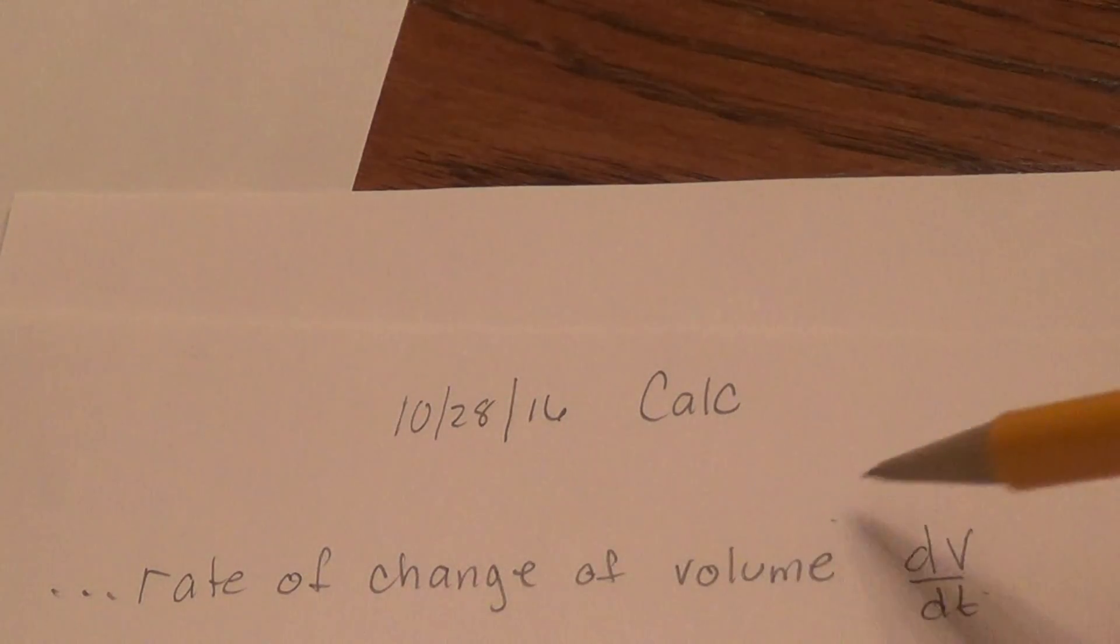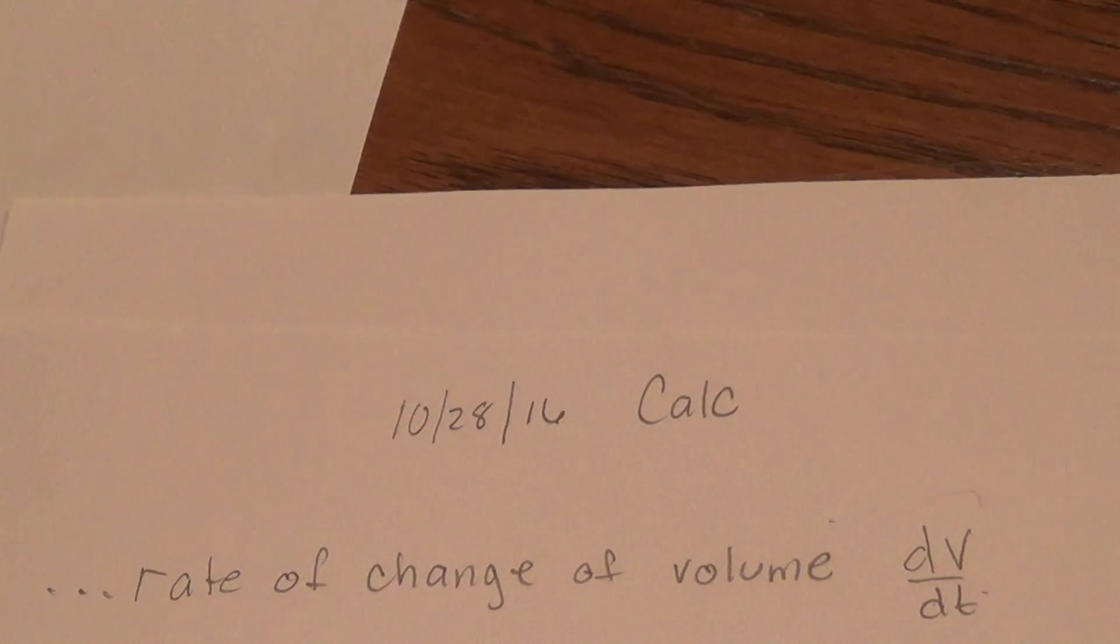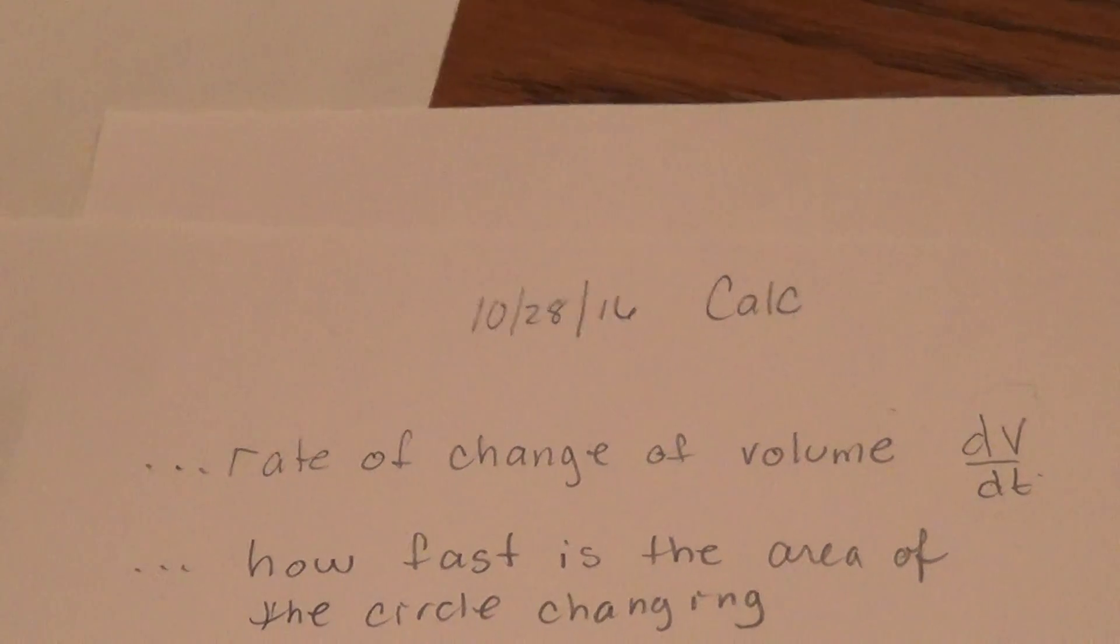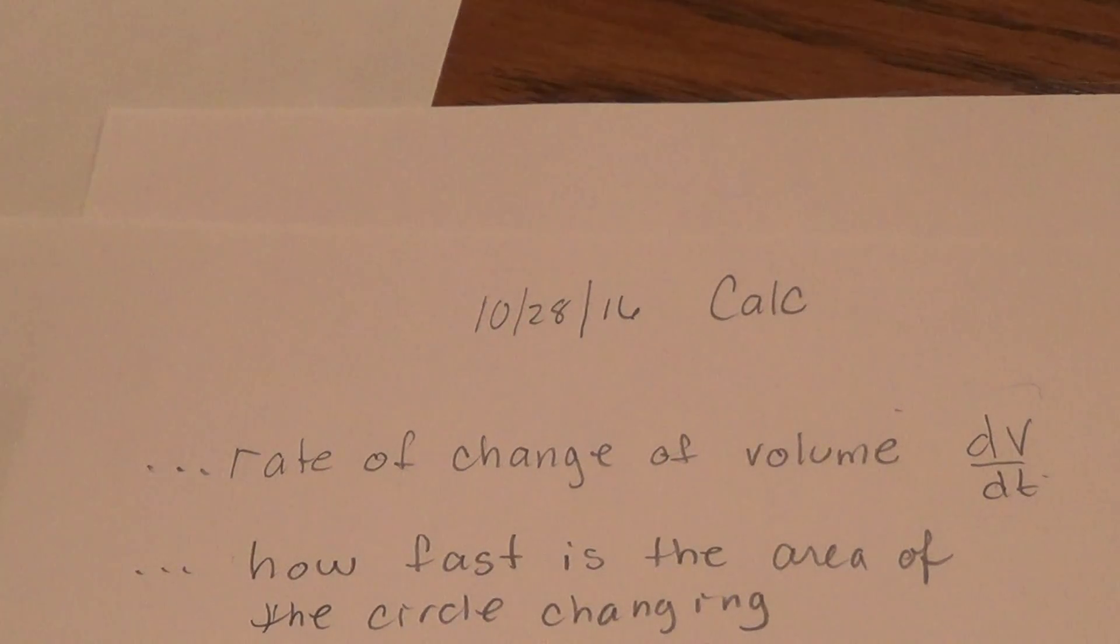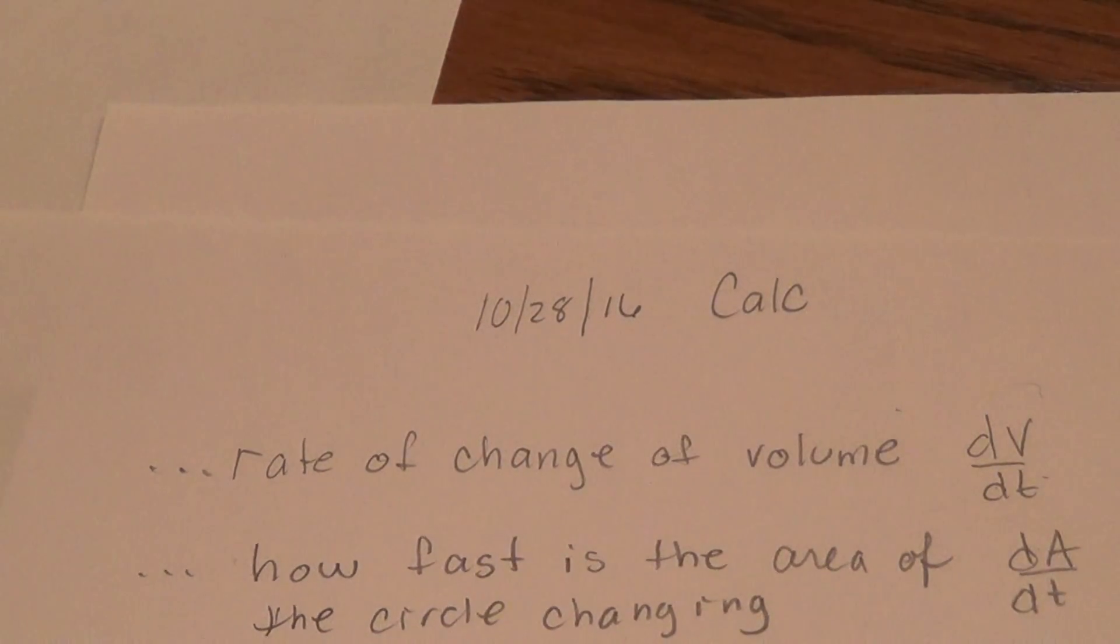How about this one? How fast is the area of the circle changing? So the derivative that that will call out to play is, if you can get it before me, dA/dt. And that's read the change in area with respect to time, dA/dt.